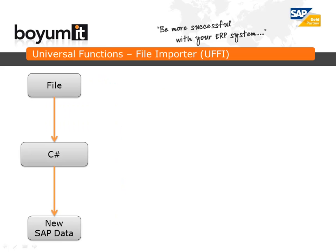The next new feature is Universal Function File Importer, or UFI for shorthand. UFI is used for importing data into SAP from a custom file format. The flow of UFI is that you have a file, you then need to write some business logic in C-sharp that reads the file and uses the DI API to import it, and finally you have some new data in SAP.